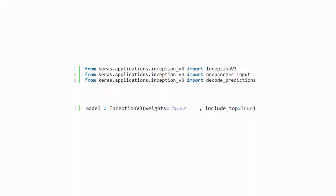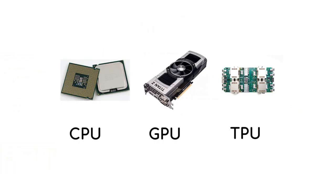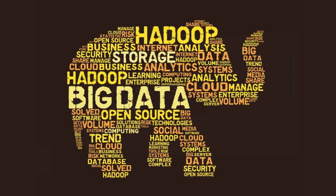Popular models already exist in Keras and we can just import the related model. Remember that almost hundreds of engineers work to design these models. They also have powerful hardware — hundreds of CPU cores, multiple GPUs or tensor processing units — all costing around $10,000 nowadays. They spend weeks or months to train the model, and most significantly they have really big data.